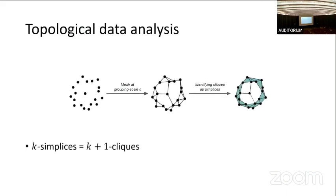So what is topological data analysis? We'd like to study the topology of some data set. Suppose you're given a data set as a bunch of points in space — how can we define the topology? We could connect points that are nearby: if points are within some radius, you draw an edge, giving you some graph. But a graph is not a topological object, because if you're like an ant on a graph, you can only move in one dimension. So we'd like to build a high-dimensional discrete manifold — the object we're looking for is known as a simplicial complex.